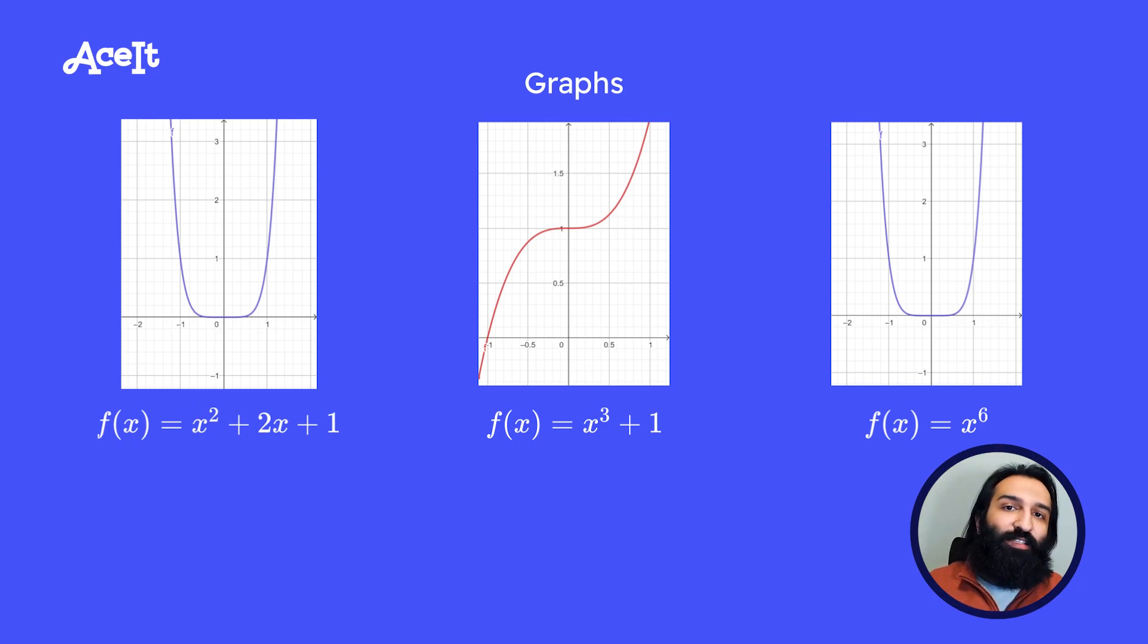Whenever the highest exponent is odd, that's when we get the odd shape you can see in the middle, where one line goes up and the other one curves down.